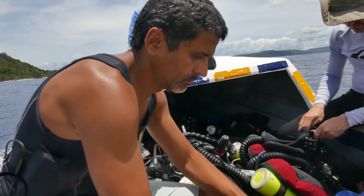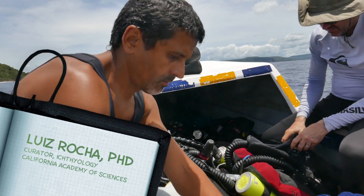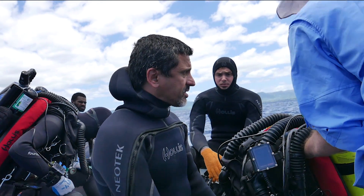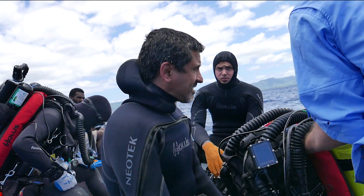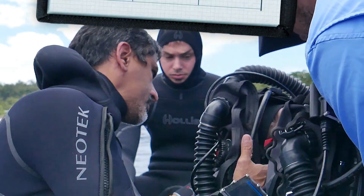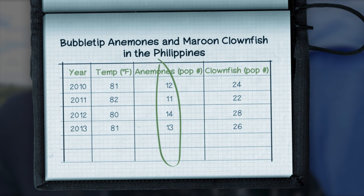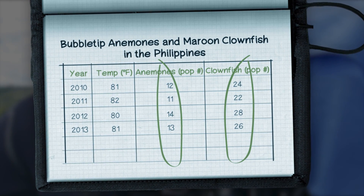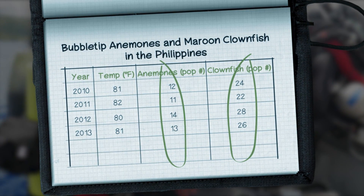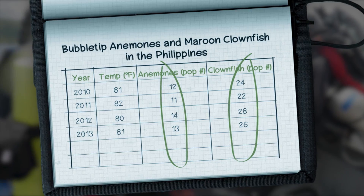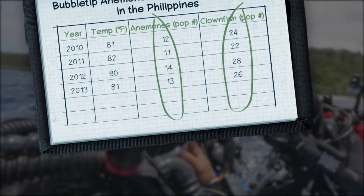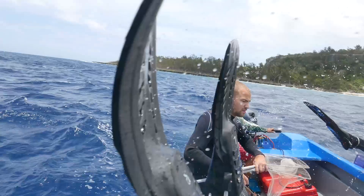Let's hear from Academy scientist Luis Rocha. When diving around coral reefs, we always find maroon clownfish living in pairs with their bubble tip anemone hosts. You can see this 2 to 1 population ratio in your field notes. Understanding this relationship allows us to make predictions about the population of maroon clownfish based on what we know about the population of bubble tip anemones.